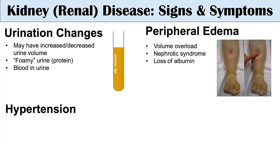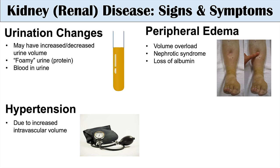The next sign with kidney disease is hypertension, or high blood pressure. This is due to increased intravascular volume — if an individual is not urinating enough volume off, they can have increased fluid in their cardiovascular system, leading to high blood pressure.